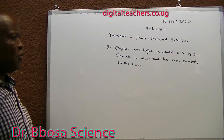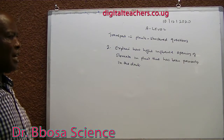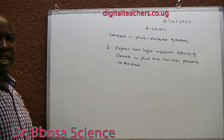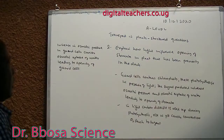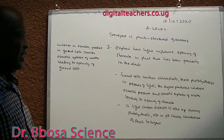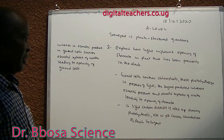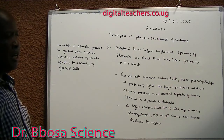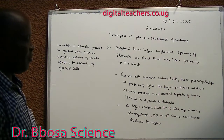Number two: explain how light influences opening of stomata in a plant that has been previously in the dark. You can pause and answer. Guard cells contain chloroplasts. These photosynthesize in the presence of light. The sugar produced increases osmotic pressure and osmotic uptake of water, leading to opening of the stomata.